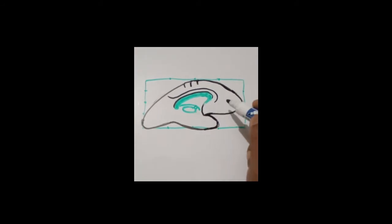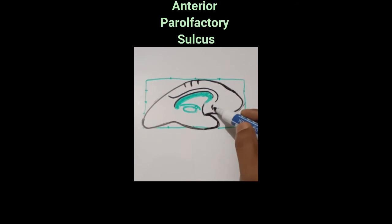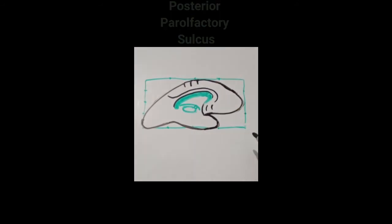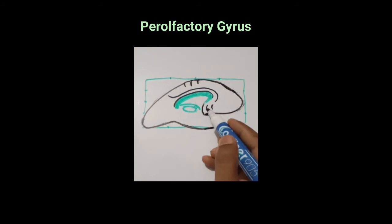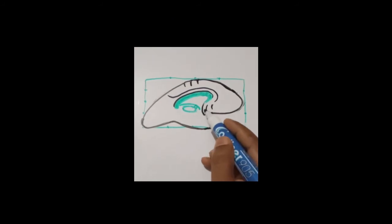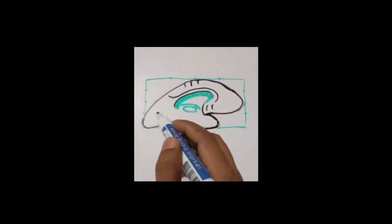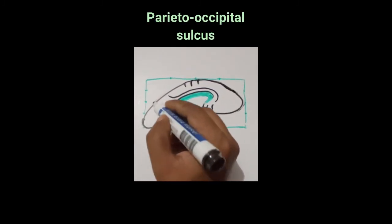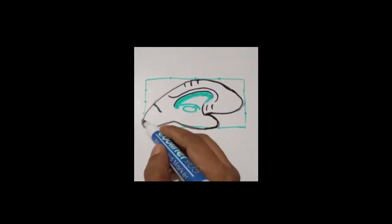Here there will be two sulci: the anterior para-olfactory sulcus and the posterior para-olfactory sulcus. In between these two, the area is termed as the para-olfactory gyrus, and behind the posterior para-olfactory sulcus it is the paraterminal gyrus.